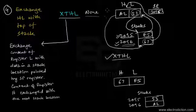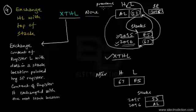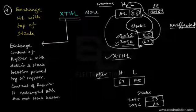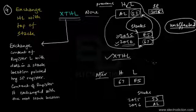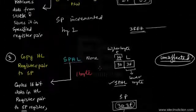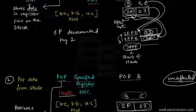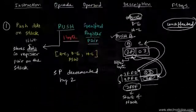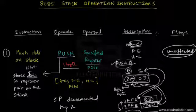Comparing the previous condition to after the instruction is executed, you can see the entire content has been exchanged between the HL register pair and the stack locations. Like the previous instructions discussed, the XTHL instruction also does not affect any of the flag bits. Finally, it should be noted that XTHL, SPHL, PUSH, and POP are all single-byte instructions. That brings us to the end of this tutorial — stay tuned and keep watching.